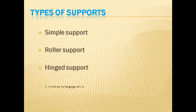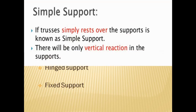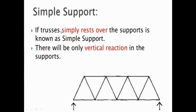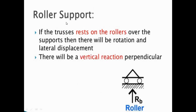Coming to types of supports — different types of support for frames are: simple support, roller support, hinge support, and fixed support. For simple support, if the truss simply rests over the supports, it is known as a simple support. This frame is resting on simple supports, and this type of support has only a vertical reaction.